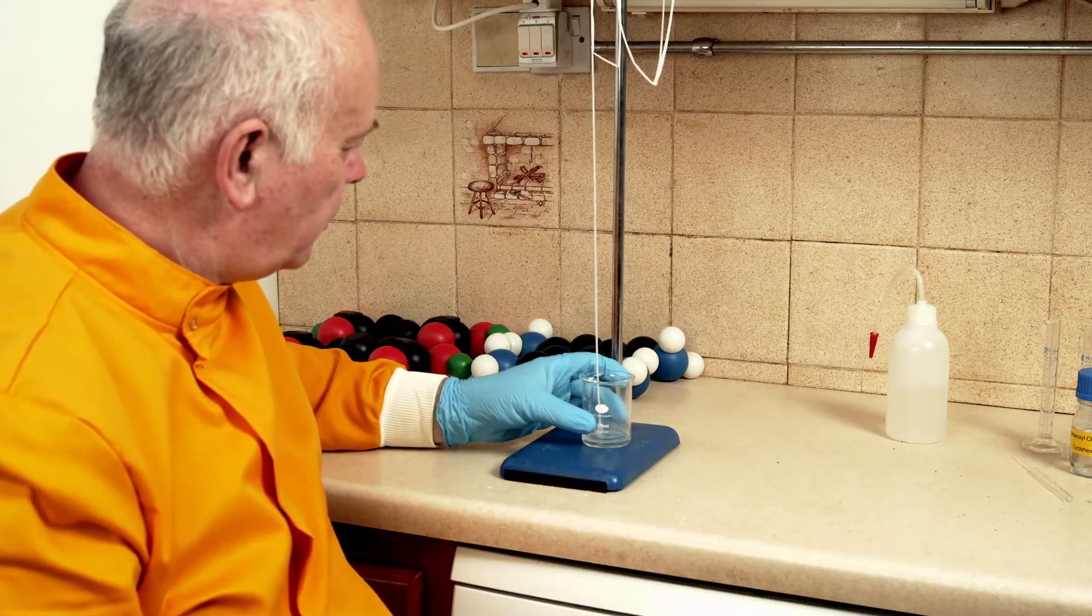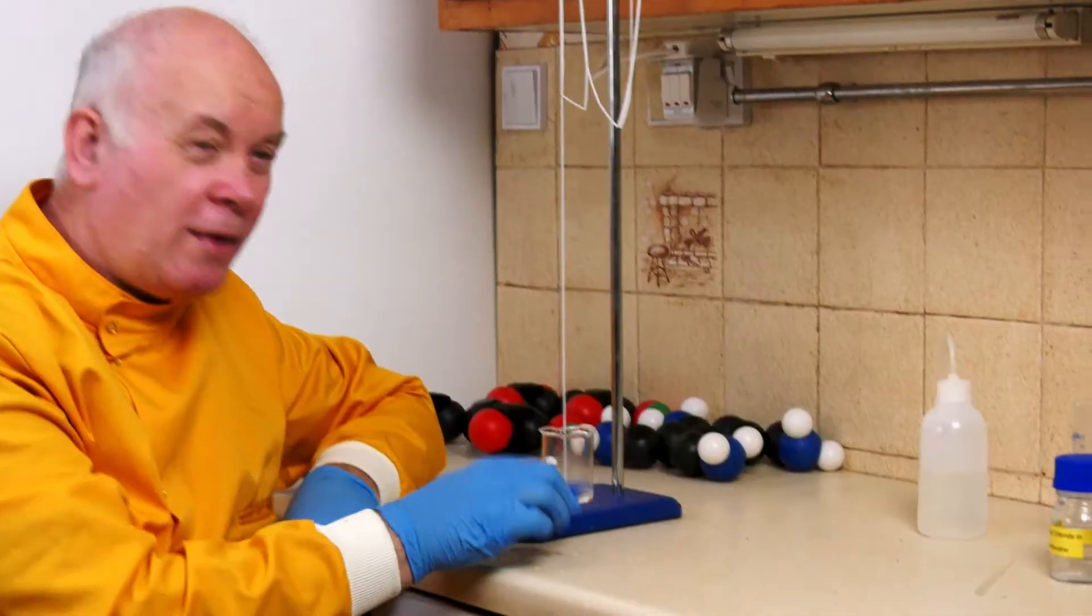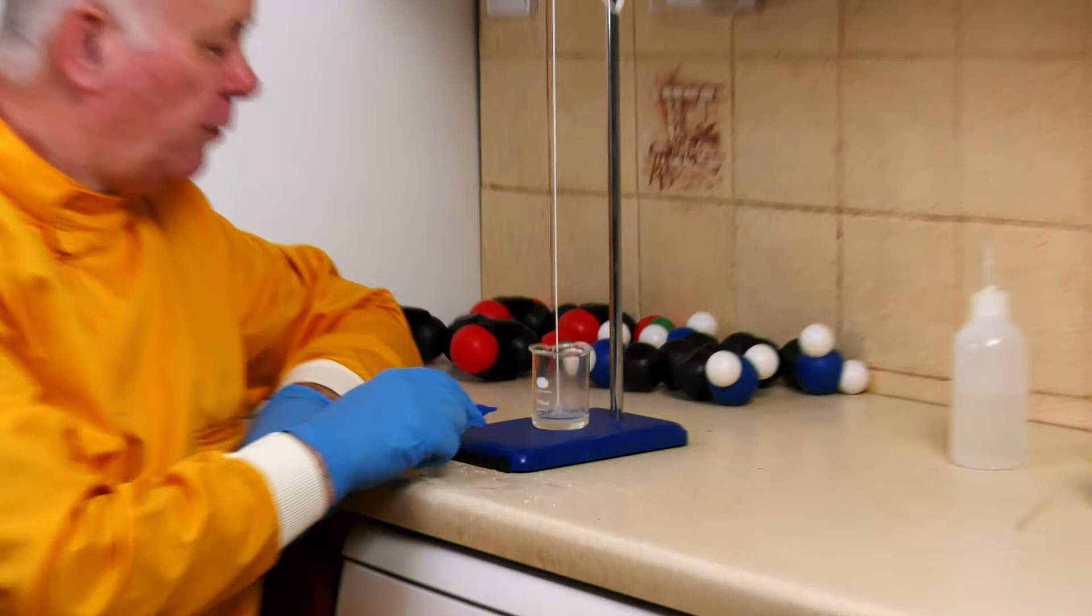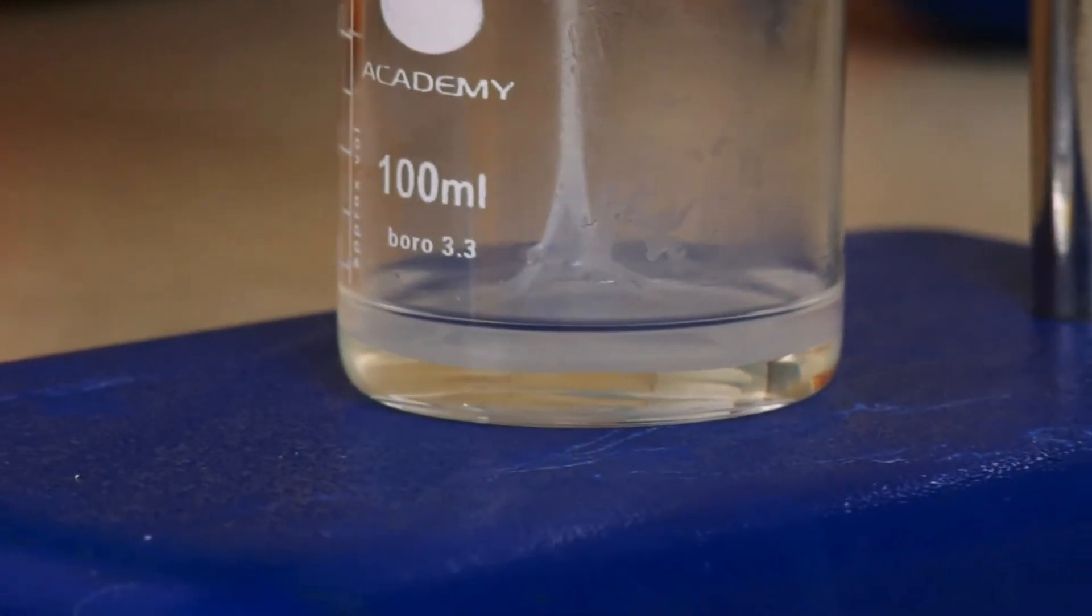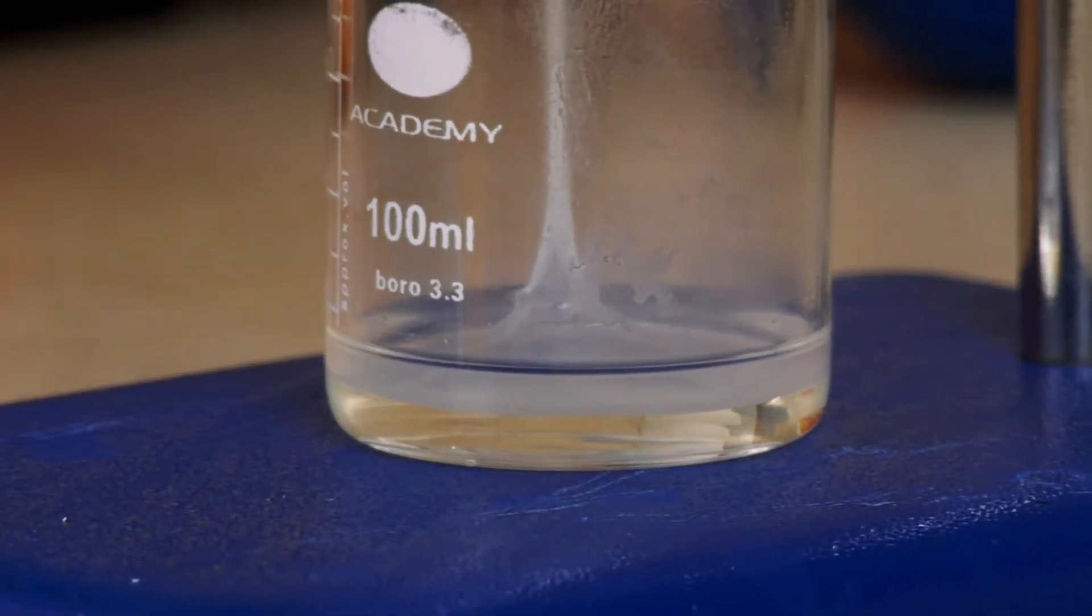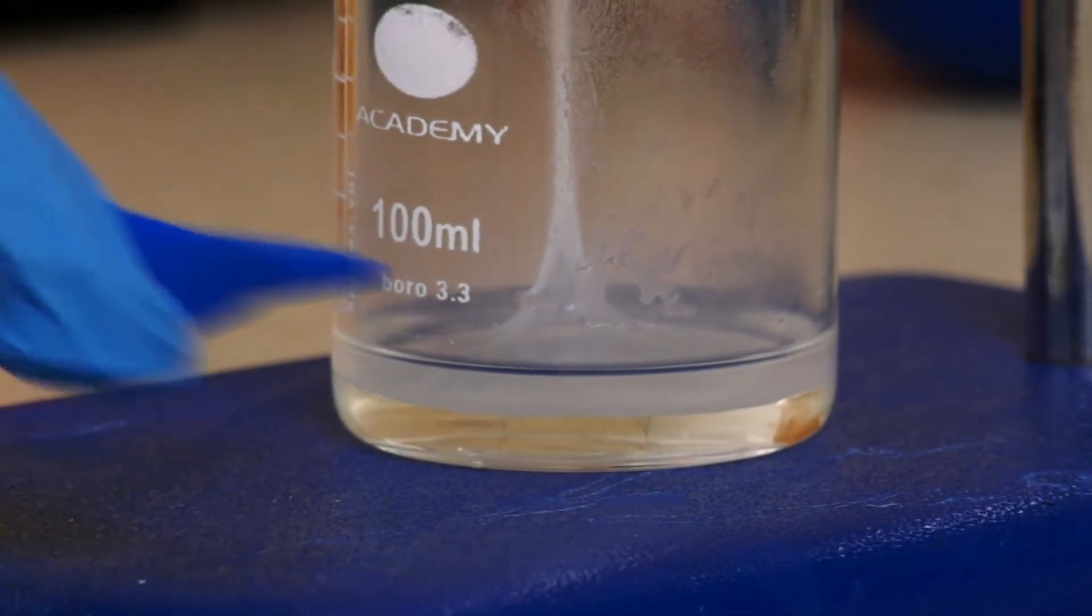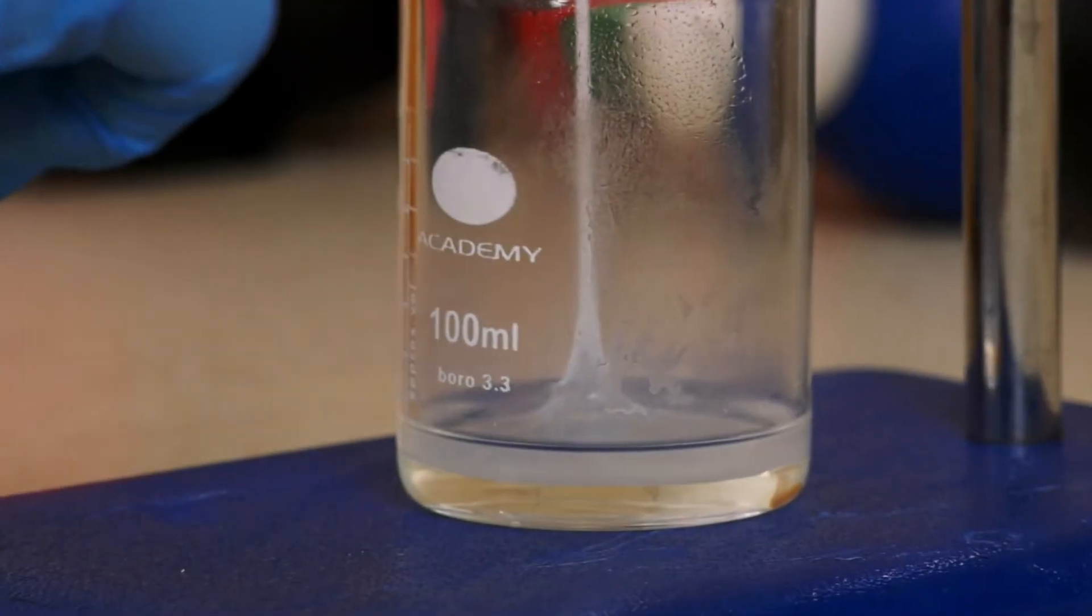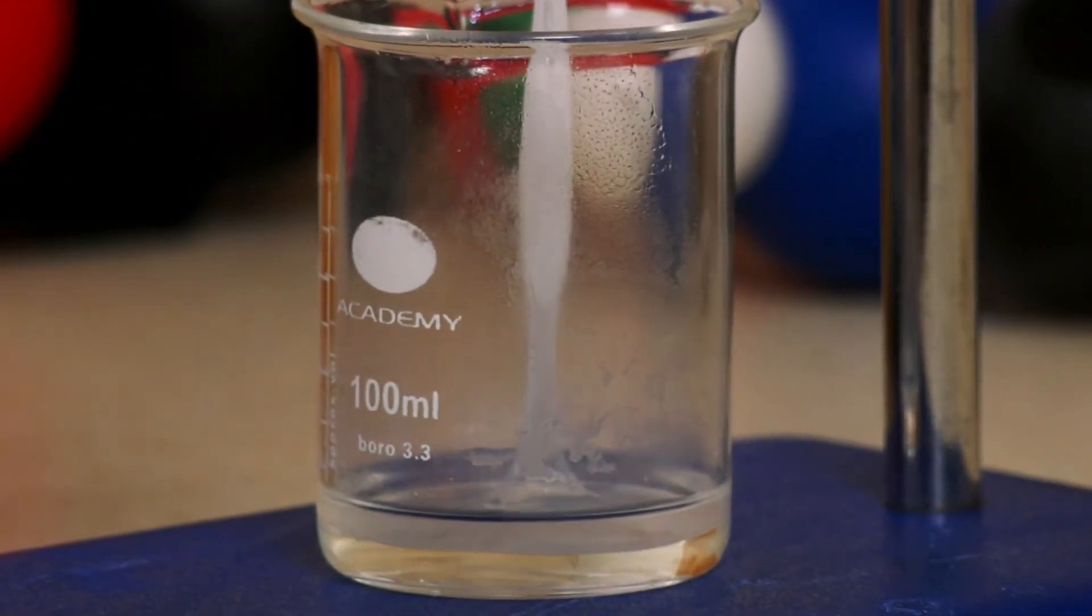So this is the reaction making nylon. The two layers, where they meet, we've got this joint that you can possibly just come in and have a look at closely. We can see how where I'm pulling, we're getting the two surfaces, the chemicals reacting together and making this chemical reaction to join these two chemicals together, and as I pull...